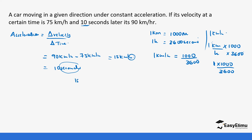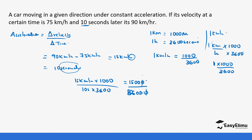So we have 15 kilometers per hour times 1000, over 10 seconds times 3600. This gives us 15,000 over 36,000, and the zeros cancel. We are left with 15 divided by 36, which simplifies to 5 over 12. The acceleration is 5/12 meters per second squared.